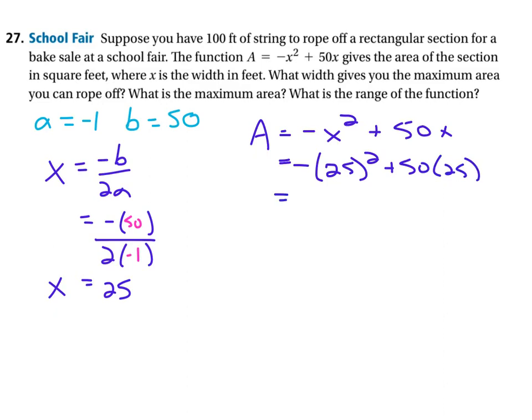25 squared is 625, so we've got the negative of 625 plus 50 times 25 is going to be 1250, and when we combine those, we get an area of 625 square feet.